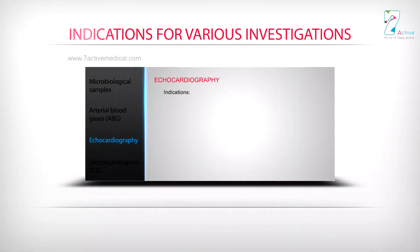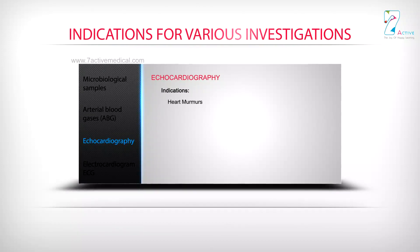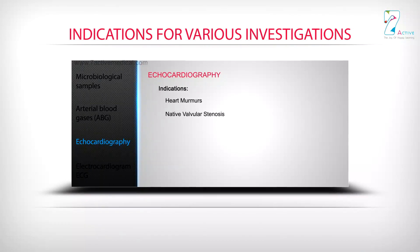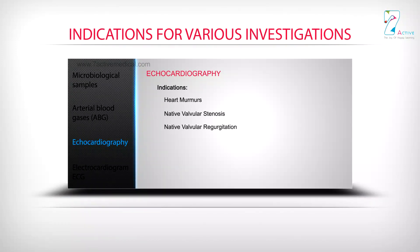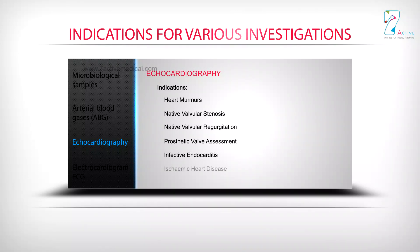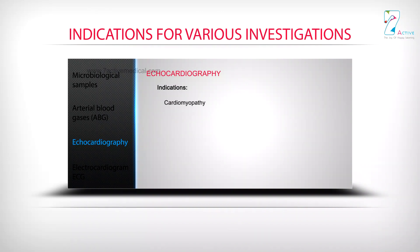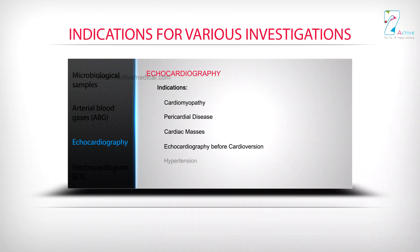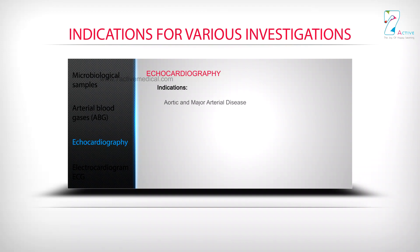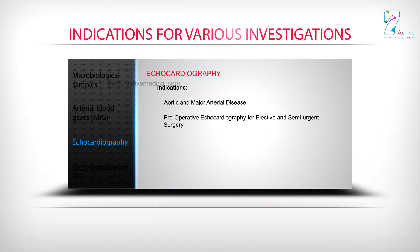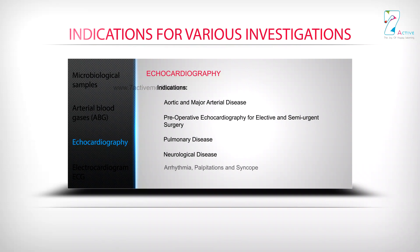Echocardiography. Indications include heart murmurs, native valvular stenosis, native valvular regurgitation, prosthetic valve assessment, infective endocarditis, ischaemic heart disease, cardiomyopathy, pericardial disease, cardiac masses, before cardioversion, hypertension, aortic and major arterial disease, preoperative echocardiography for elective and semi-urgent surgery, pulmonary disease, neurological disease, and arrhythmia.